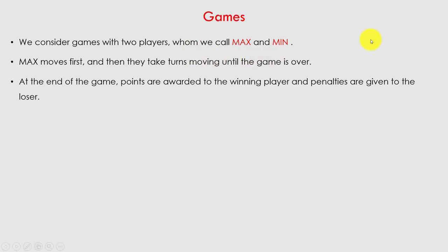At the end of the game, points are awarded to the winning player and penalties are given to the loser. The winning player may be max or min. After the game is over, there is one winner and one loser.